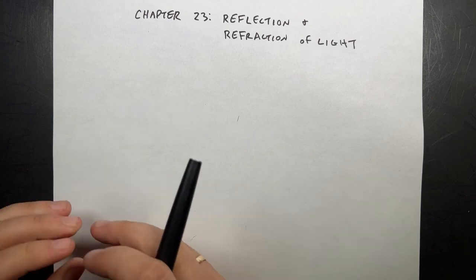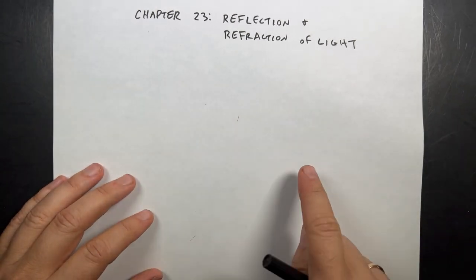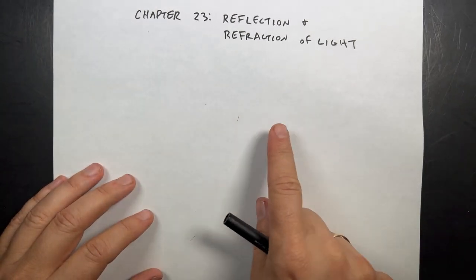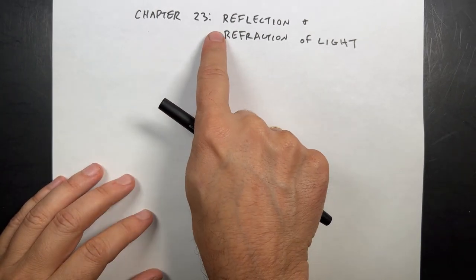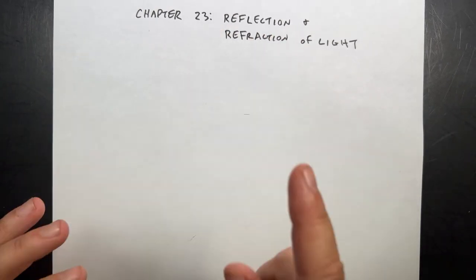I am continuing to work through my chapter summaries for College Physics by John Batiste. I'm on Chapter 23: Reflection and Refraction of Light.